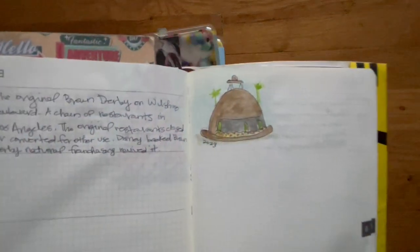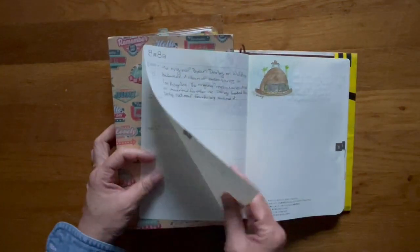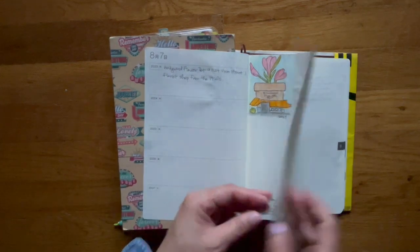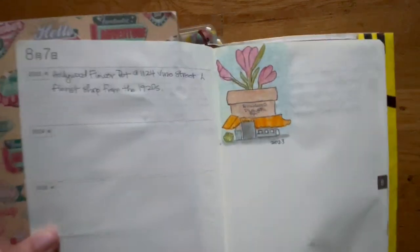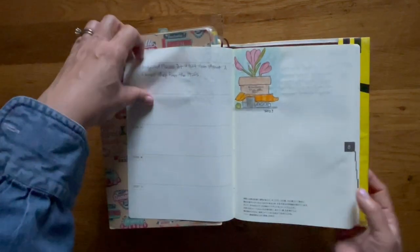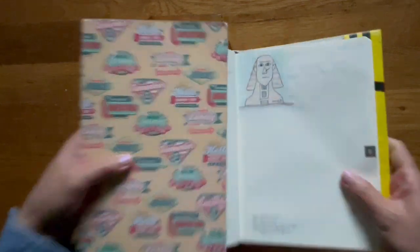This is the brown derby. It didn't come out as nice as I had hoped, but it's supposed to be a hat, a derby hat. This is actually a florist shop. And that's what that looked like. It actually had a flower pot on top of the roof.